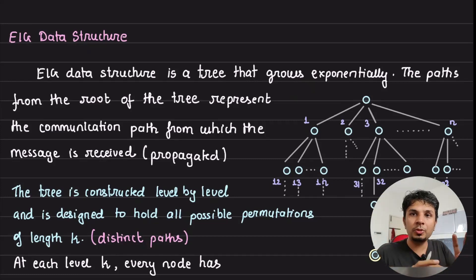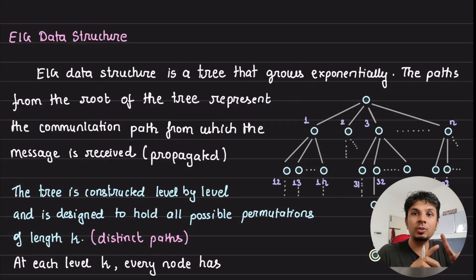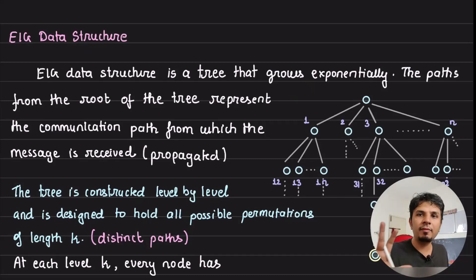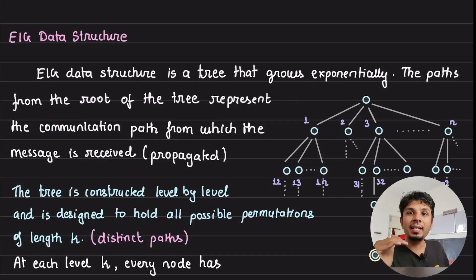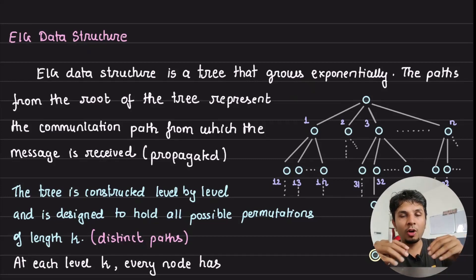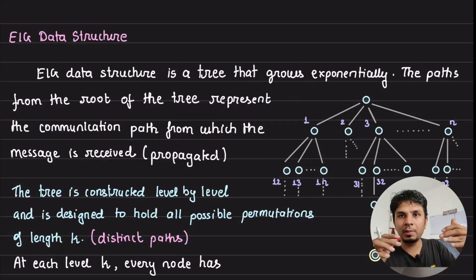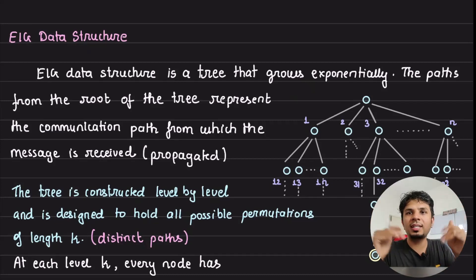The construction procedure is covered in the previous video — I would highly recommend you check that out. But here I'll cover the gist of it. Because this tree is constructed level by level, at each level we would have all possible permutations of length K. So at level K, we would have all possible permutations of length K of all the nodes in the system.